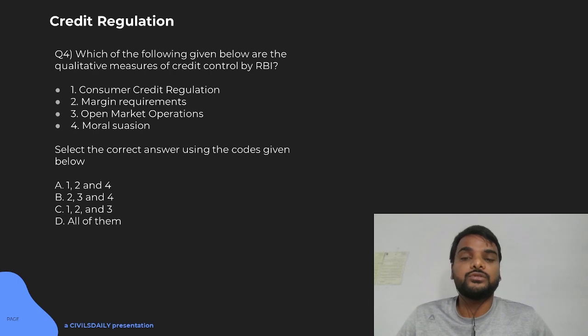All these will affect the liquidity in the system and money available in the market to be loaned to the consumers or investors. That will be quantitative measures. But RBI also takes certain qualitative measures to direct the flow of credit to small investors and what will be the terms of recovery, what are the guidelines to be followed while giving credit, and what will be the ratio that is margin requirement. Consumer credit regulation, that is true. Margin requirements, that is also true.